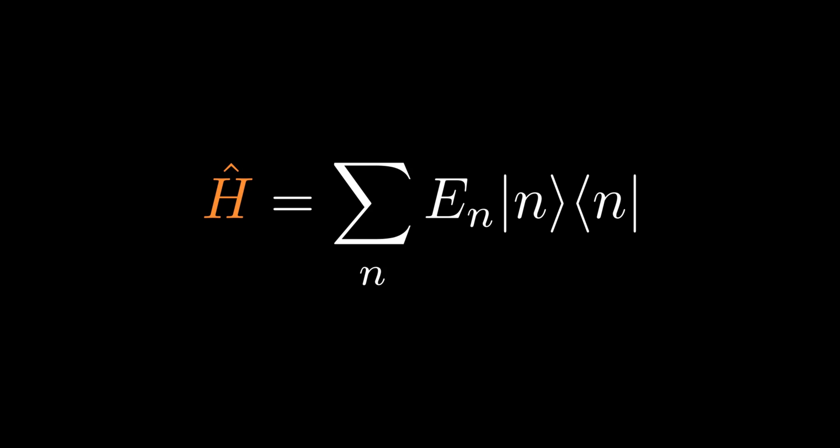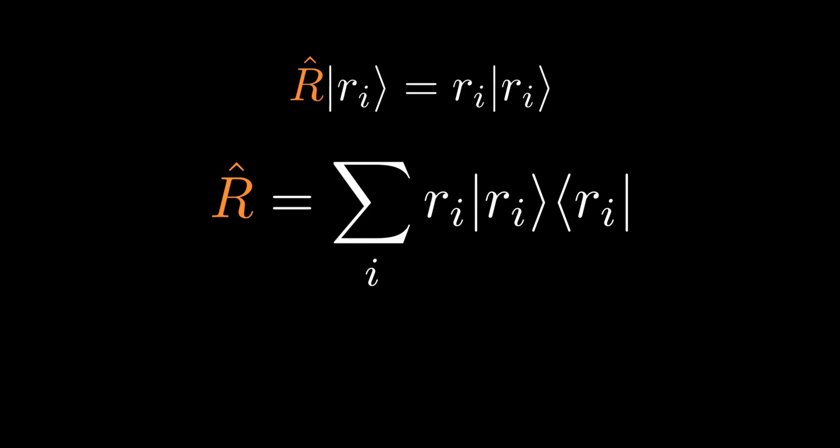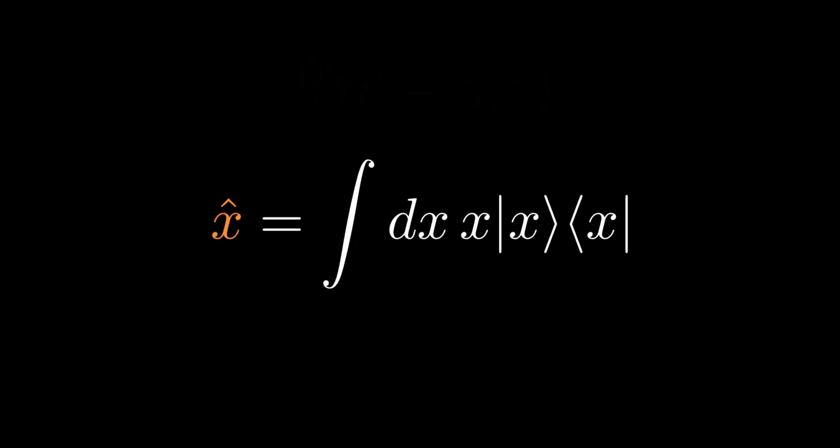We have only considered energy as an observable, but the procedure above can be generalized to any observable. Suppose R is one of the observables, it would have eigenvalue equation and expansion displayed on the screen. We can also generalize this to a continuous spectrum. For example, the position operator is the integral of all possible positions times x times ket x bra x.